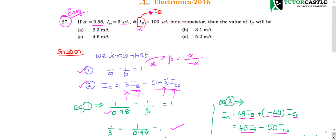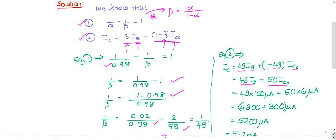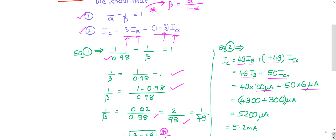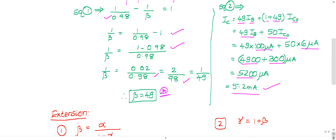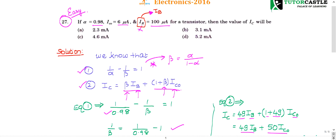IB is given as 100 micro amperes and IC naught is 6 micro amperes. So: 49 × 100 + 50 × 6 = 4900 + 300 = 5200 micro amperes, which equals 5.2 milli amperes. So the right answer is option D: 5.2 milli amperes. If you don't confuse IR with IB, this question is very very simple.